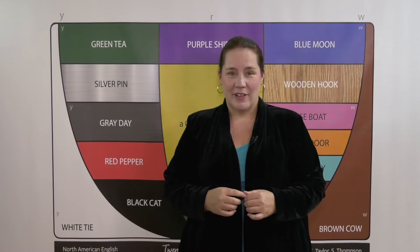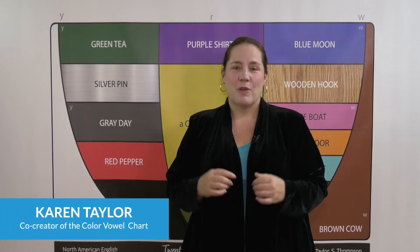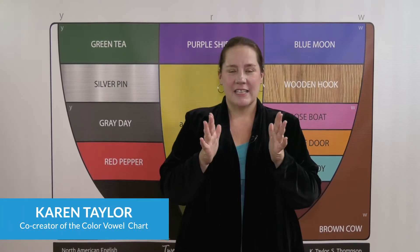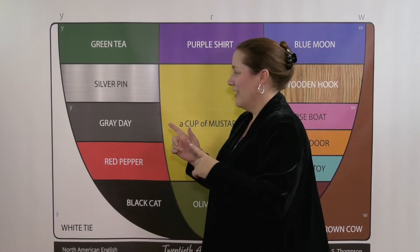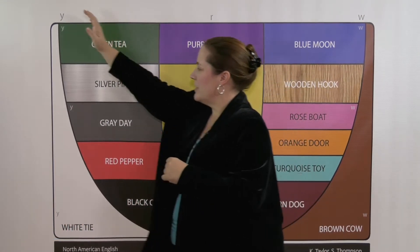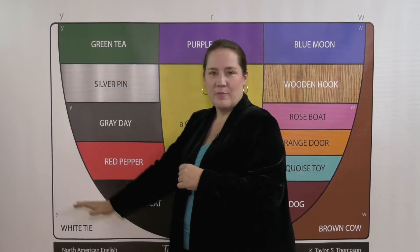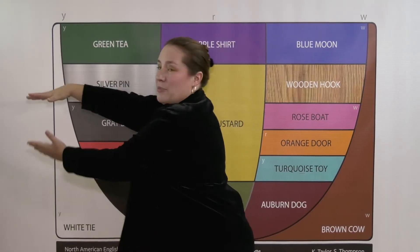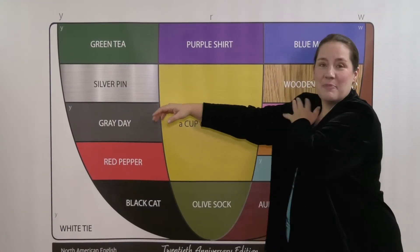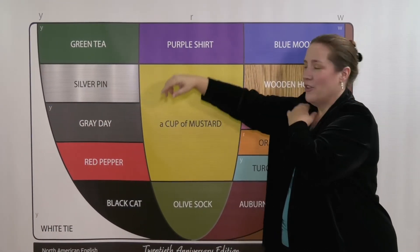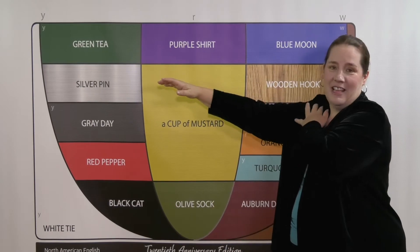The shape of the Color Vowel Chart represents the inside of your mouth in profile. This is the front of your mouth where your lips are, and this is the back of the mouth where your tongue is anchored.